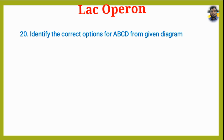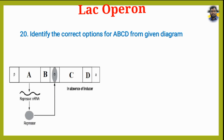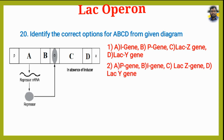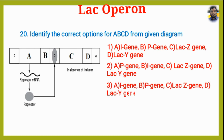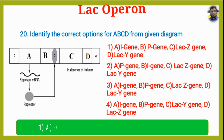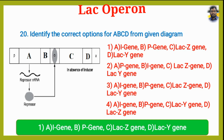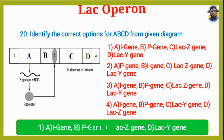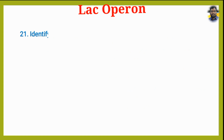Identify the correct options for A, B, C, D from the given diagram. Option 1: A=I gene, B=P gene, C=Lac Z gene, D=Lac Y gene. Option 2: A=P gene, B=I gene, C=Lac Z gene, D=Lac Y gene. Option 3: A=I gene, B=P gene, C=Lac Z gene, D=Lac Y gene. Option 4: A=I gene, B=P gene, C=Lac Y gene, D=Lac Z gene. The answer is Option 1.